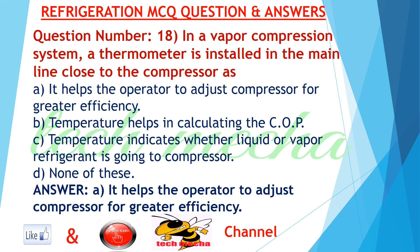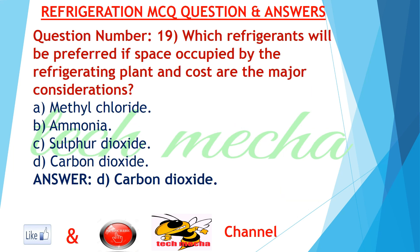Question number 18: In a vapor compression system, a thermometer installed in the main line close to the compressor A. helps the operator to adjust compressor for greater efficiency, B. temperature helps in calculating the COP, C. temperature indicates whether liquid or vapor refrigerant is going to compressor, D. none of these. Answer: A. it helps the operator to adjust compressor for greater efficiency.